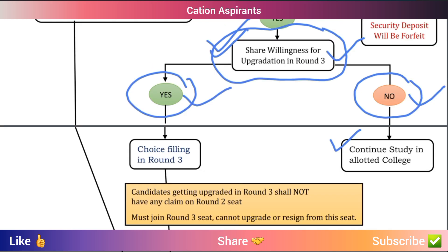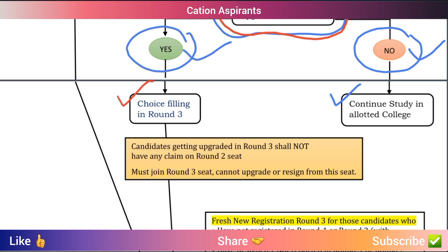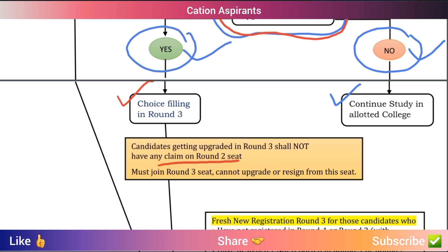If you have been allotted a college and want to attend that college, you have the option to indicate your willingness to attend Round 3. If you have been allotted a medical or dental college seat in Round 2, you can hold that seat. If you have a seat from Round 2 carried into the pool, you will have the right to that seat. If you are allocated a seat and want to proceed to Round 3, you may do so.